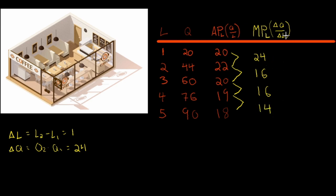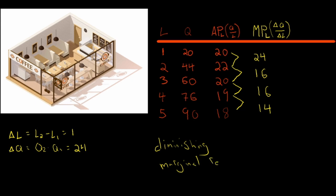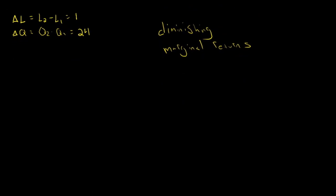We witness that at the margin, every extra worker gives diminishing marginal returns. We would typically expect that as we add more and more workers for a fixed level of capital, output increases but at a decreasing rate — the amount of extra output we get from each extra worker is less and less. Let's look at this through a simpler story.